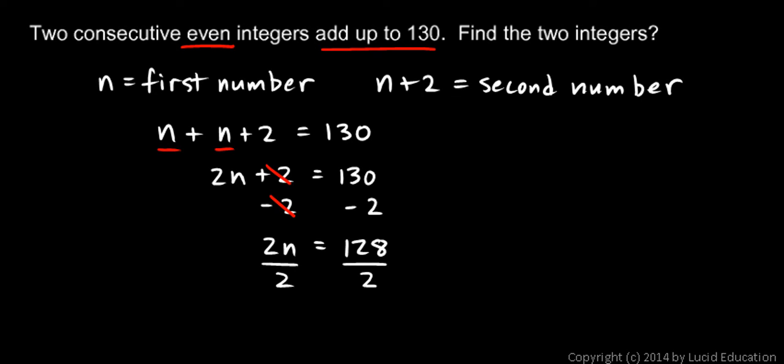And the 2 and the 2 cancel. And I'm left with n is 128 divided by 2. And 128 divided by 2 is 64.